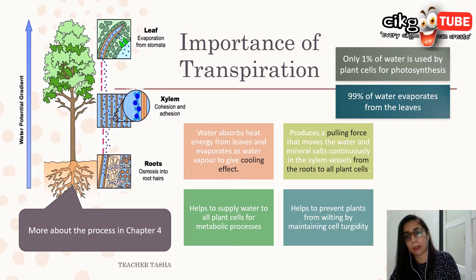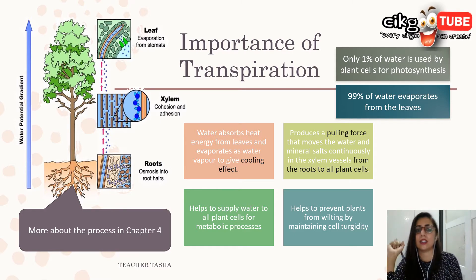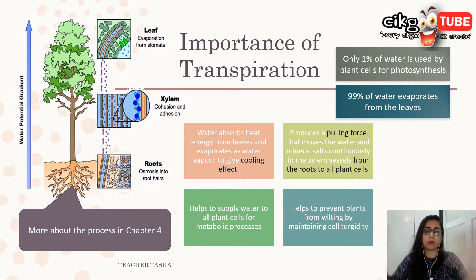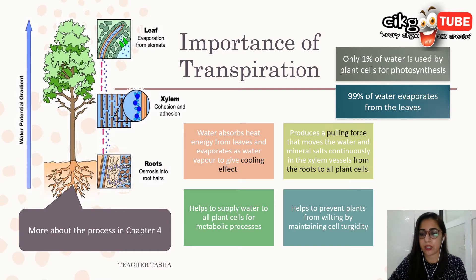Transpiration also helps to supply water to all plant cells for metabolic processes. Plants don't just carry out photosynthesis — they also carry out other metabolic processes, and you will learn more about transpiration in chapter four.